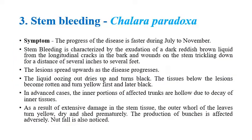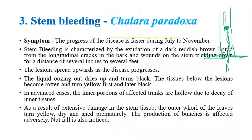Stem Bleeding is caused by Chalara paradoxa. The name itself indicates the symptom: a reddish-brown viscous liquid exudes from the stem region. Unlike basal rot where only bleeding is seen, in stem bleeding, longitudinal cracking of the stem is also clearly visible. As the disease progresses, the previously bleeding stem portions slowly turn black in color, and extensive damage to the stem region can be observed in later stages.